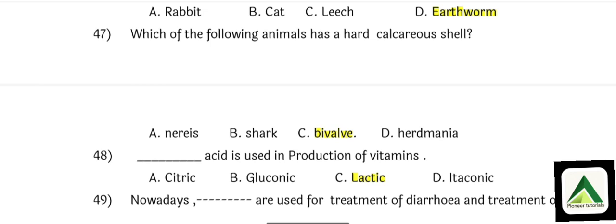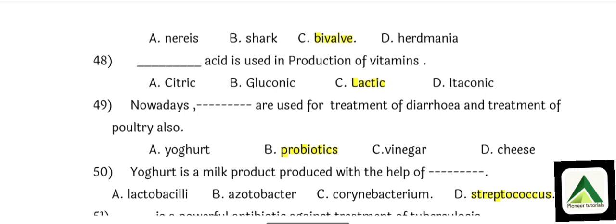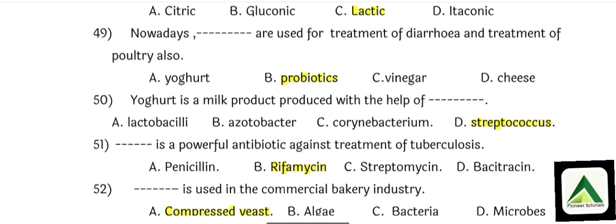Question number 46: Which animal is called the friend of the farmer? That is option number D: Earthworm. Question number 47: Which of the following animals has a hard calcareous shell? That is option number C: Bivalve. Question number 48: Dash acid is used in production of vitamins. Option number C: Lactic. Question number 49: Nowadays, these are used for treatment of diarrhea and treatment of poultry. That is option number B: Probiotics.